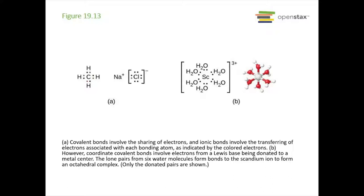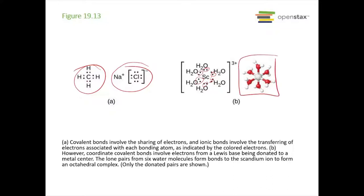Here are some examples. In A, we have a covalent bond where carbon shares electrons with hydrogen, each donating one electron, and sodium chloride where electrons are transferred to form ions. In B, we have a coordinate covalent bond where a pair of electrons is donated to the metal center. You can see all the lone pairs on the waters being donated to the scandium in the center, forming an octahedral complex as shown in 3D.